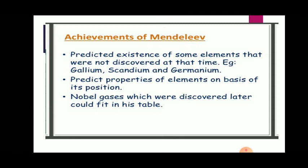Now we will see the achievements of Mendeleev's periodic table. The big achievement is that he kept spaces for elements which were not discovered at that time. Now in the modern periodic table there are 118 elements, but at that time only 63 were known. Elements discovered after that include gallium, scandium, and germanium. He predicted the properties of elements — including hydride and oxide chemical and physical properties — based on their position. He even predicted the properties of unknown elements that would later be discovered. Nobel gases, which were not yet discovered, could fit in his table. These are the achievements of Mendeleev's periodic table.